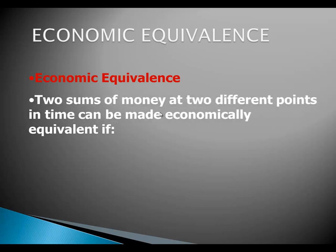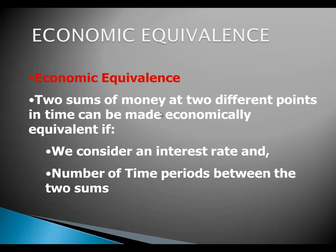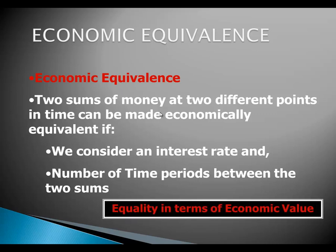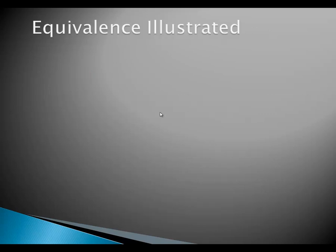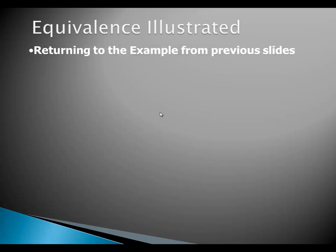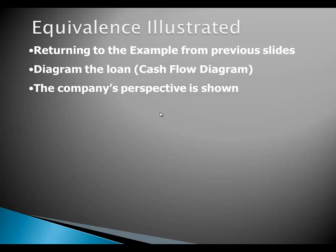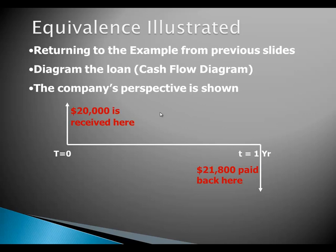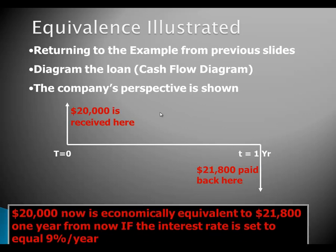Taking into consideration interest rate and number of time periods between the two sums, the equivalence here will be in terms of economic value. Going back to our example from previous slides, we can say that $20,000 at time 0 is equivalent to $21,800 at the end of year one, if the interest rate is set equal to nine percent per year.